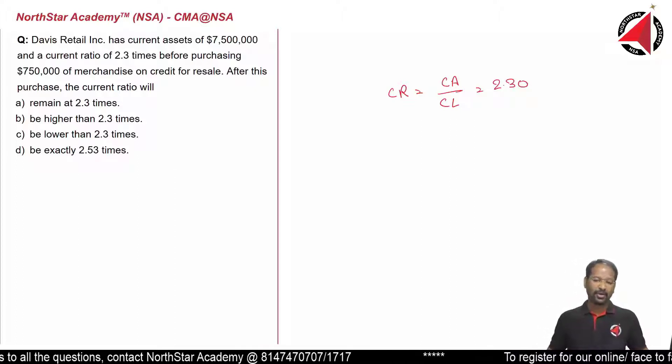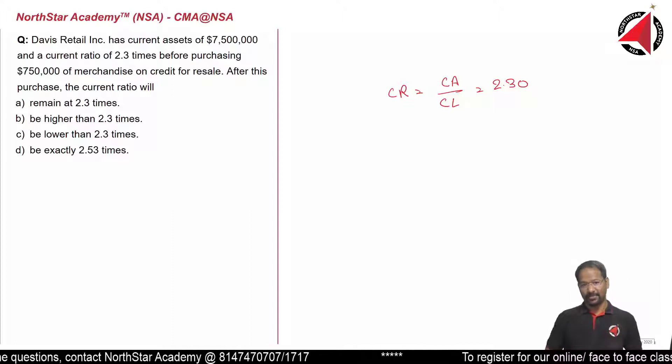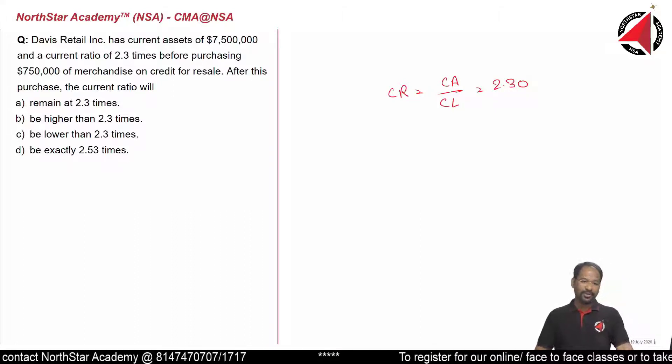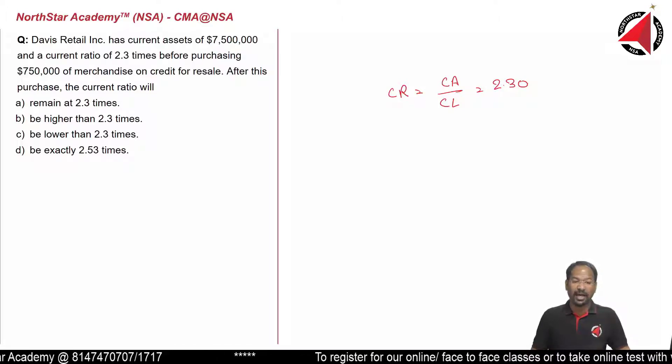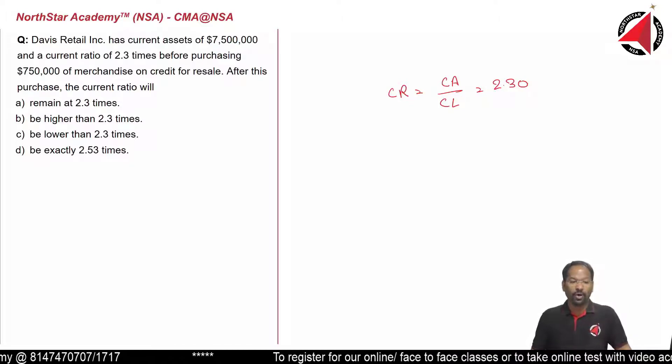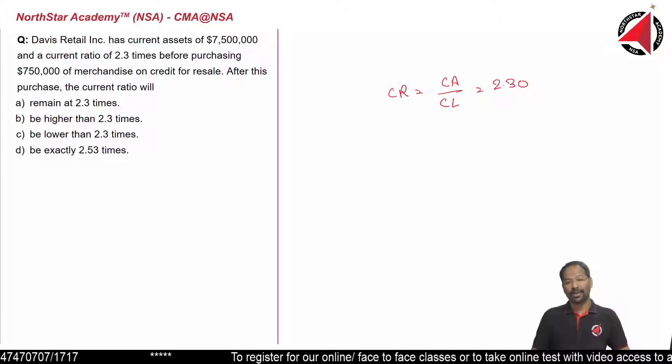Yes, we can find out, but do we need it? That depends upon the options. If you look at the first option, it says remains at 2.3 times, be higher, be lower, or be exactly 2.53 times.